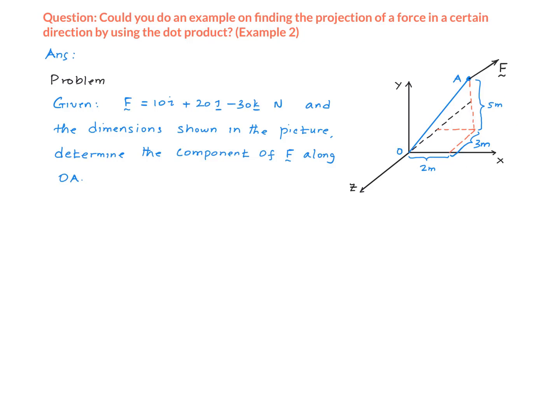Also in the previous problem, we had a cable along the direction of the force, and the coordinates of two points on the cable were given, so we had to find a vector between the two points. But here, the force F is given in its component form. So these are some of the differences between the two problems.